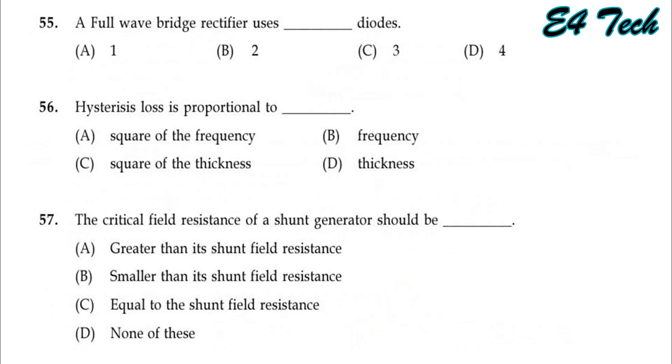A full wave bridge rectifier uses how many diodes? The minimum number of diodes is equal to 4 diodes. That is Option D.